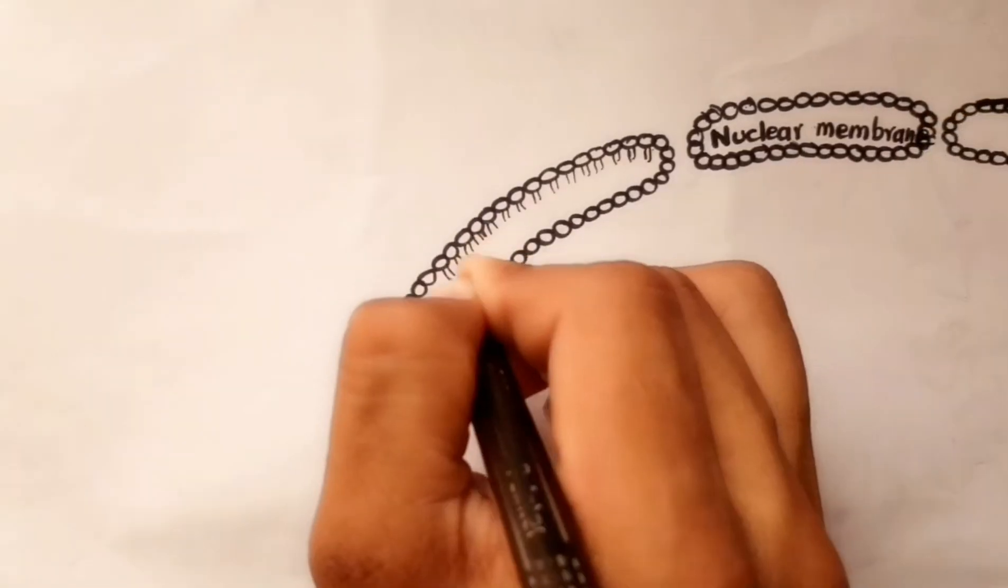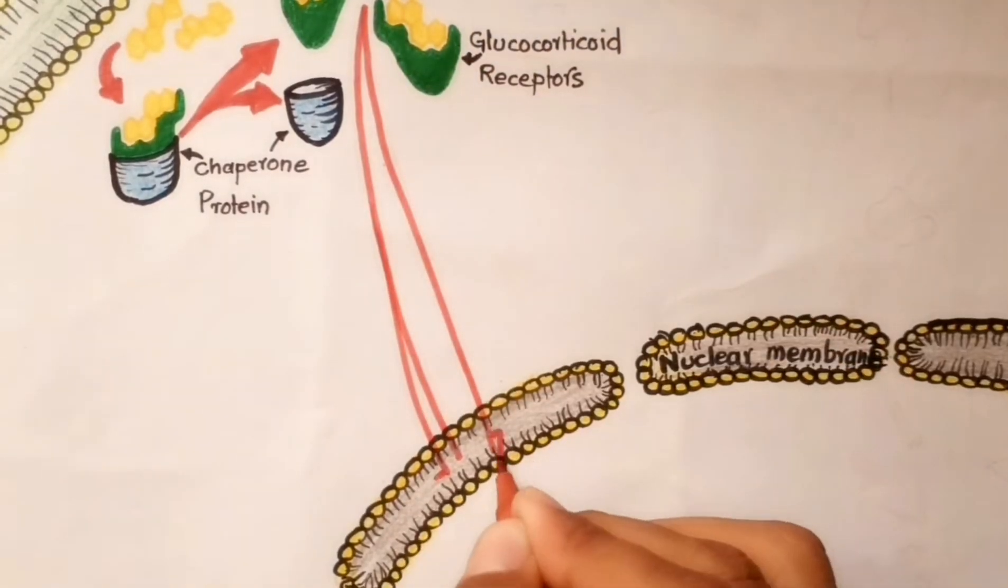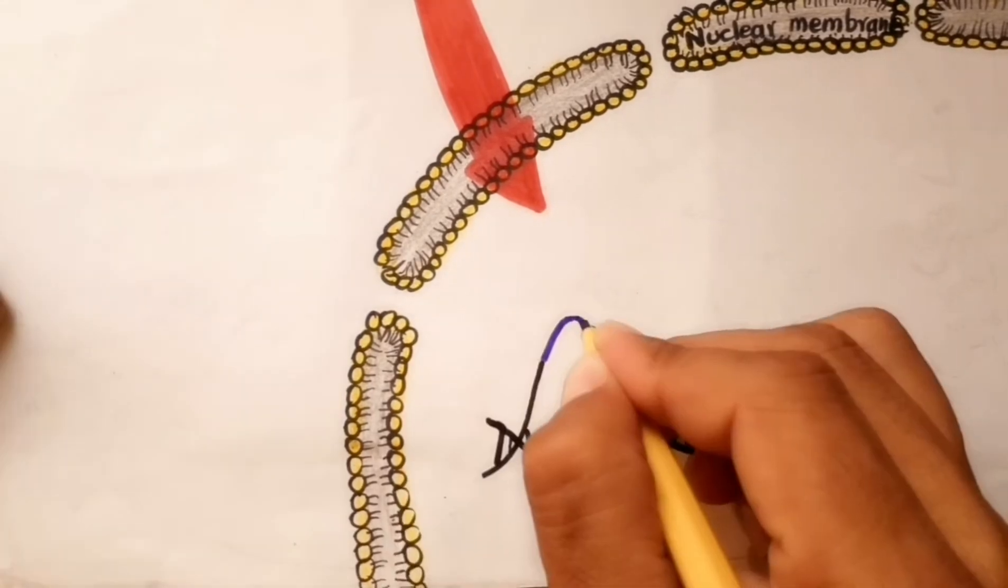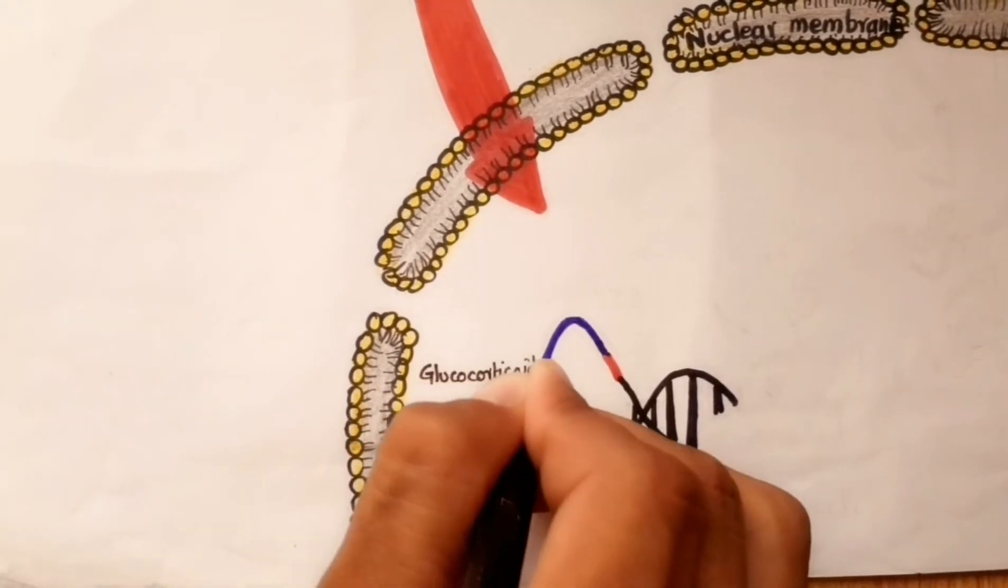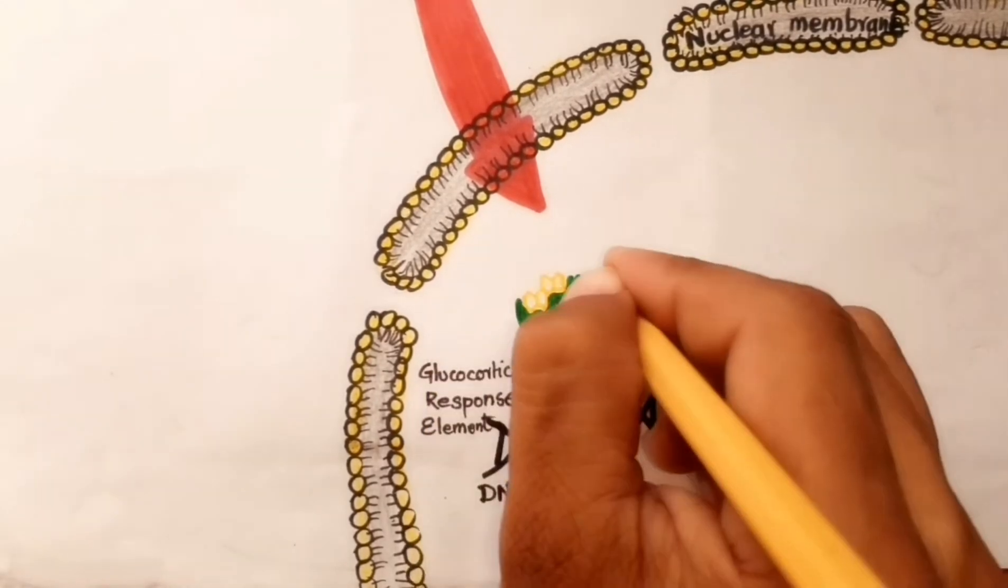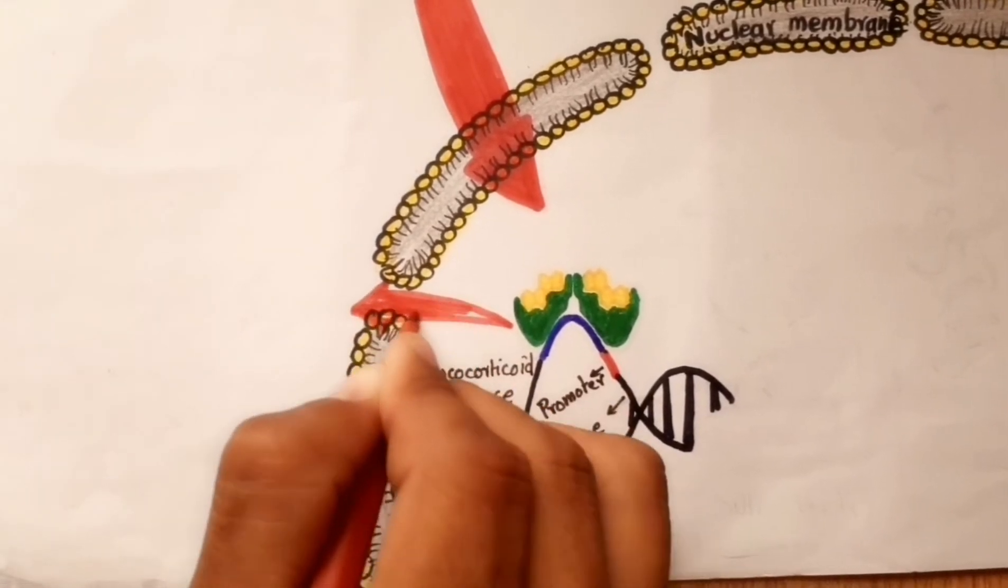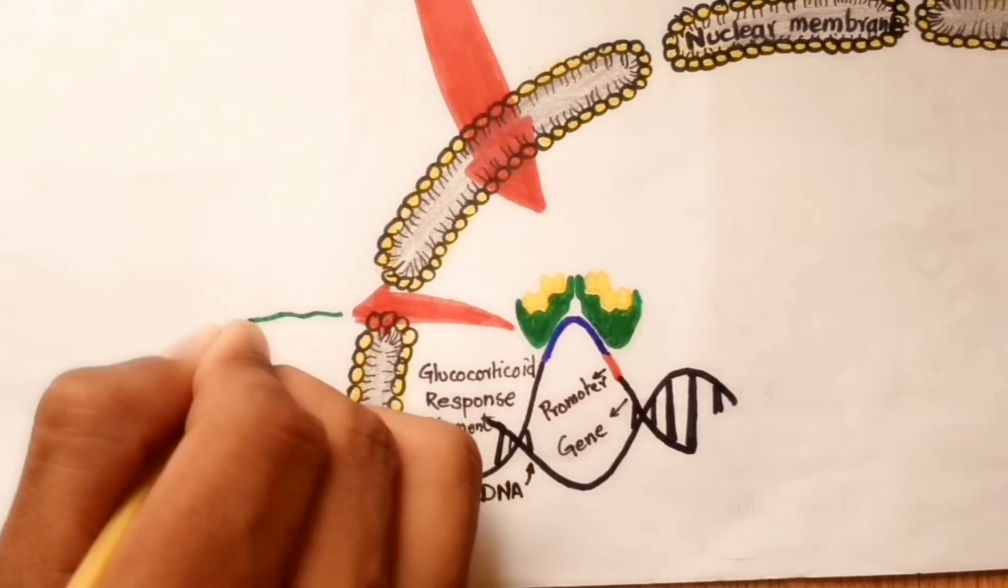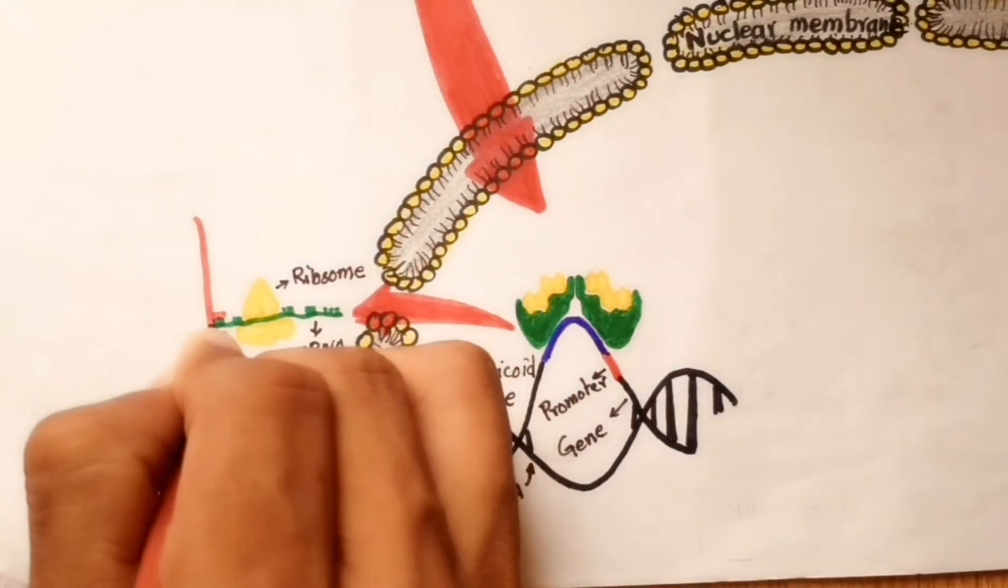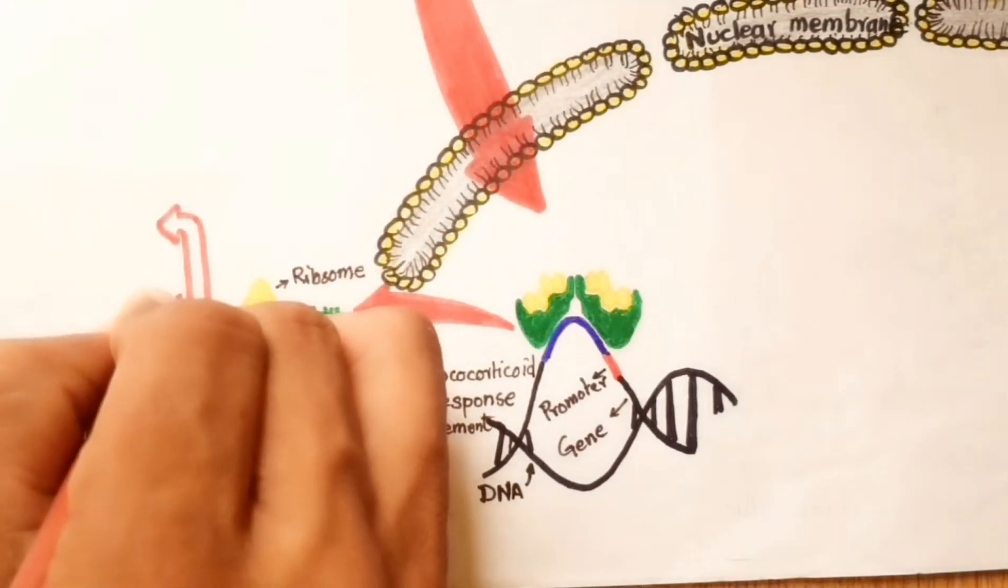This results in rapid transport of the activated GR-dexamethasone complex into the nucleus, where two GR molecules bind together as a homodimer and bind to DNA at specific sequences in the promoter region of corticosteroid-responsive genes, known as glucocorticoid response elements. Interaction of GR with glucocorticoid response elements classically leads to an increase in gene transcription through the production of mRNA.